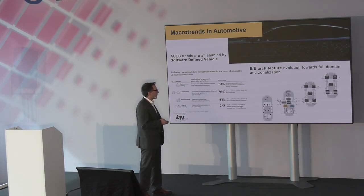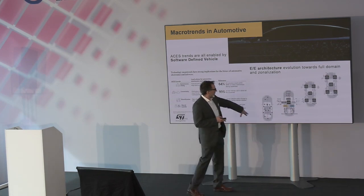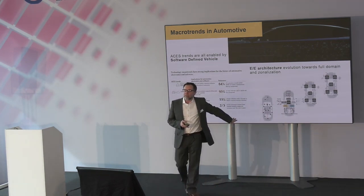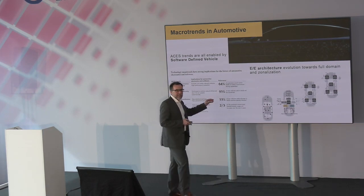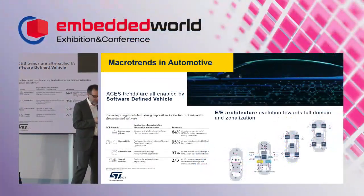Cars basically have a lot of scattered ECUs used all around the vehicle. What we are seeing now is different domains with a lot of ECUs, but also domain controllers. The trend is to go to zonal gateways — centralized modules in contact with sensors and actuators in each corner of the car. This is the market trend we will see in the coming years.